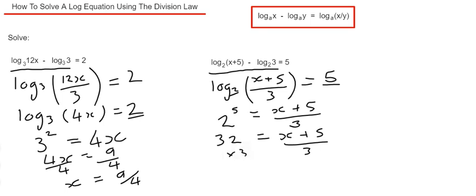So we just solve this equation now. If we times both sides by 3, that will give us 96 equals x plus 5. Then we just need to subtract 5 away, so that will give our final answer of x equals 91. So make sure you like and subscribe.